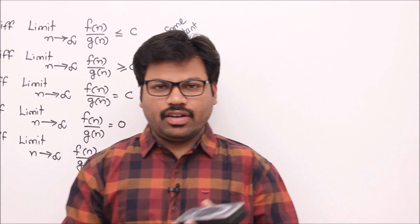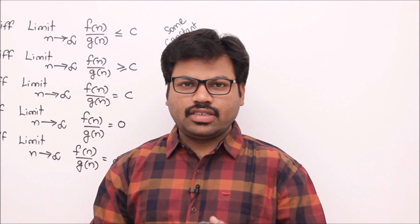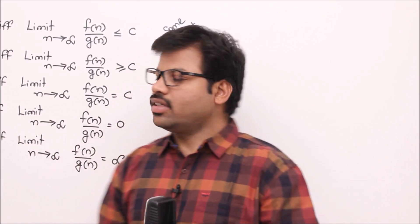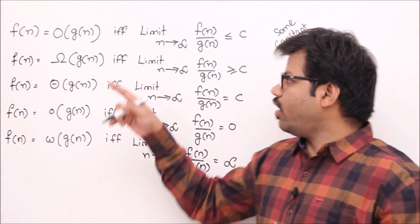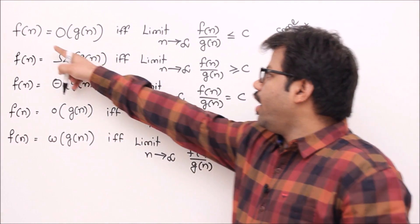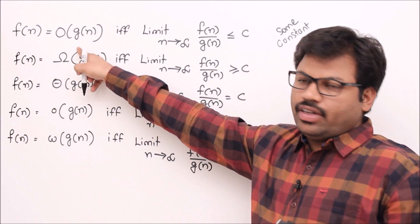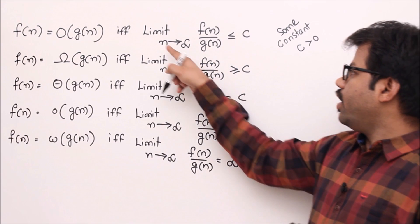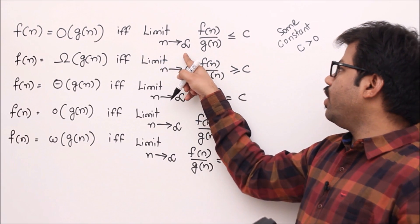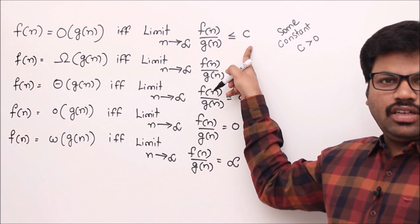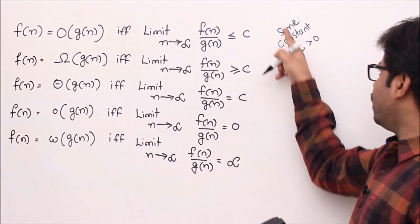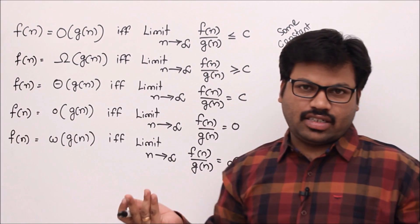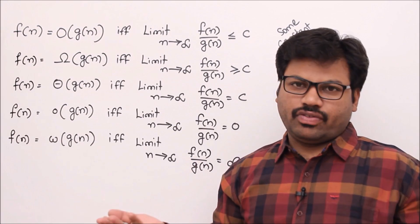Let's see how to compare functions f(n) and g(n) asymptotically using different formulas. f(n) = O(g(n)) if and only if the limit as n tends to infinity of f(n)/g(n) is less than or equal to some constant c, where c is a constant greater than 0.